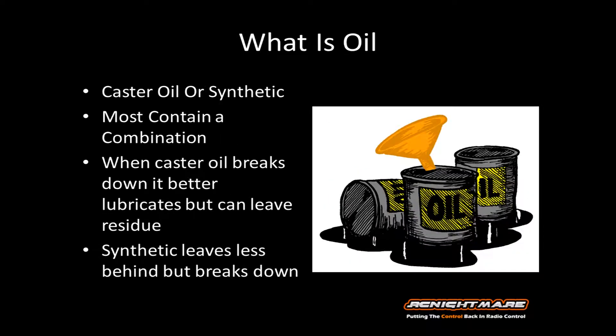The third ingredient in nitrofuel is oil. For a long time they used castor oil, and then they moved to synthetic. Nowadays most nitrofuels contain a mix of the two. There are key differences between castor oil and synthetic oil though. When castor oil breaks down, it actually better lubricates the engine, but as a side effect it can leave behind a residue that builds up and gunks up your motor. Synthetic doesn't typically leave behind much residue, but when it breaks down, you can lose some of the lubrication you'd get with castor oil. That's why most fuels contain a mixture of both.